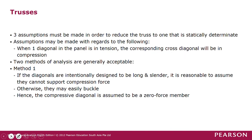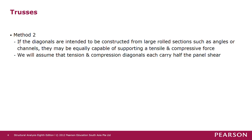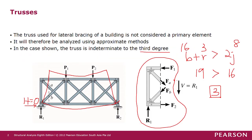For Method 2, if the diagonals are intended to be constructed from large cross sections such as angles or channels, they may be equally capable of supporting tensile and compressive forces. We assume that the tension and compression diagonals each carry half of the panel shear. Therefore, in Method 2, we assume that half of the panel shear is taken by FA and half is taken by FB. So FB is not zero but has a value of compressive force, such that the vertical components of force A and force B each contribute to resisting the panel shear V.